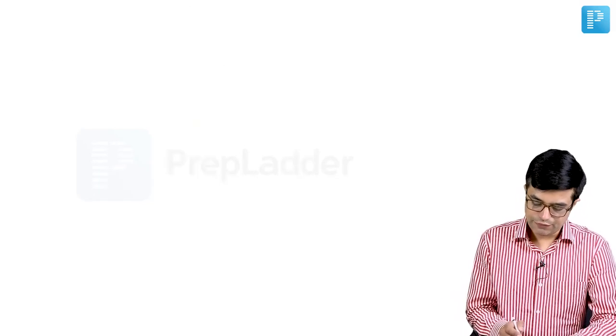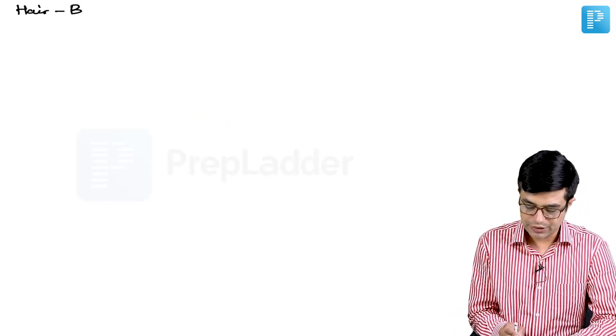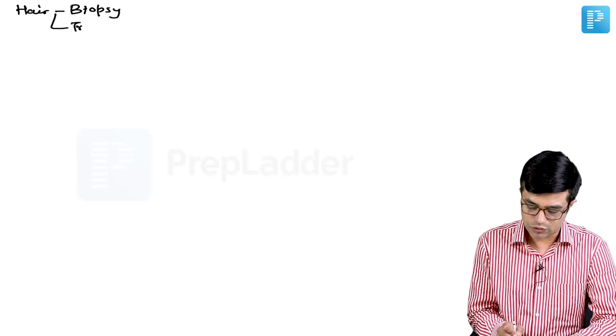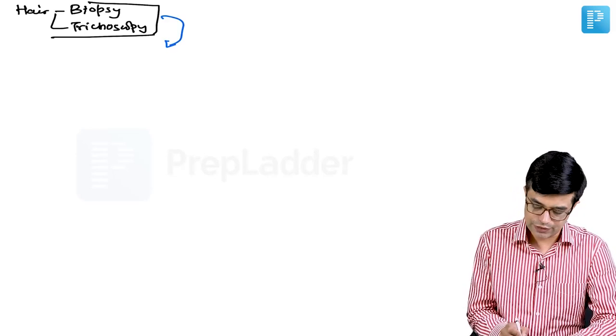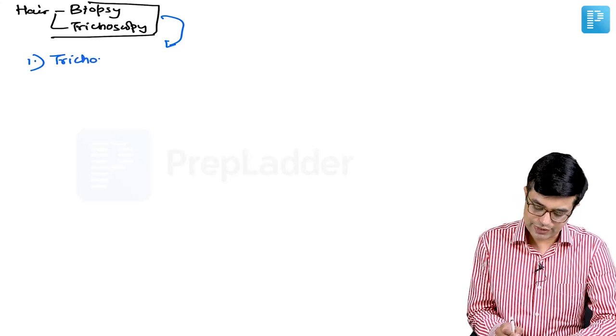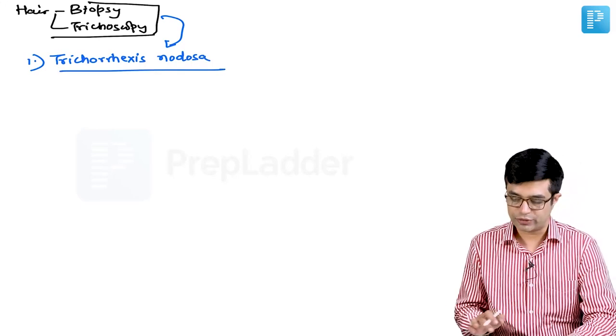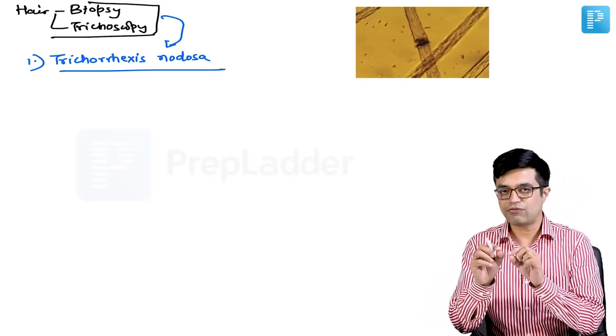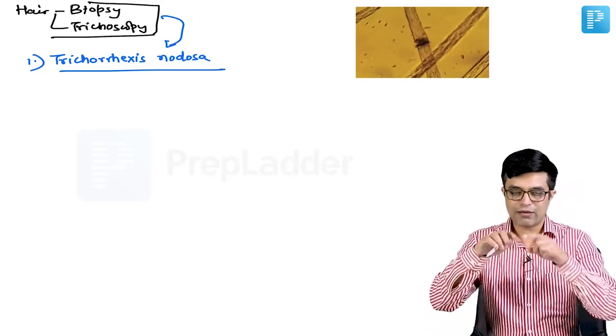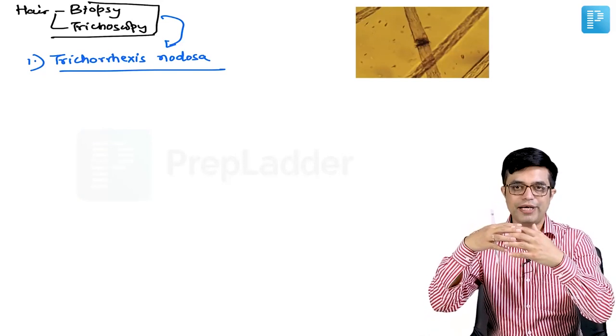If you do hair biopsy or if you try to look through trichoscope, that is trichoscopy, you will find specific abnormalities being seen in these individuals. First of all there will be trichorexis nodosa. In trichorexis nodosa, let me show you a picture. This is how the hair will look like. This is a hair and there will be microscopic fractures in the hair with the two microscopic fragments having a fuzzy brush border, and these brush borders will be interlocking with each other.